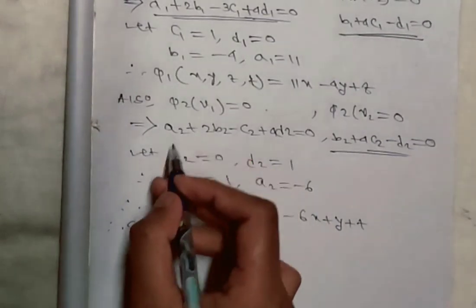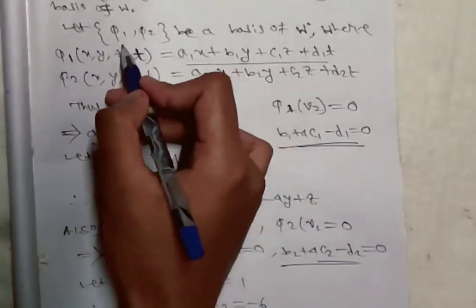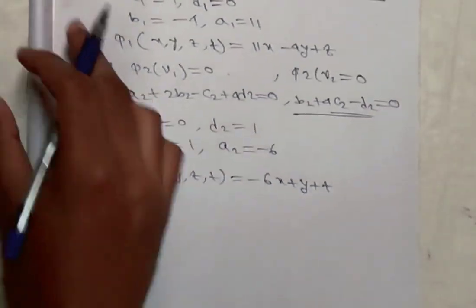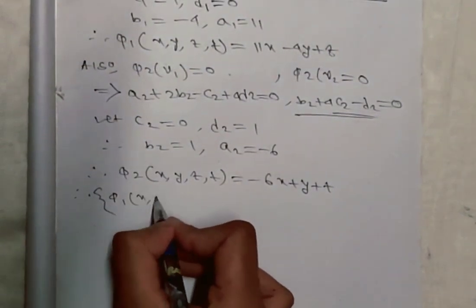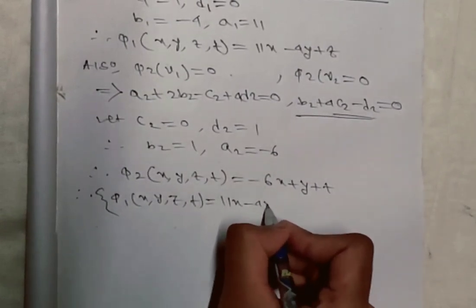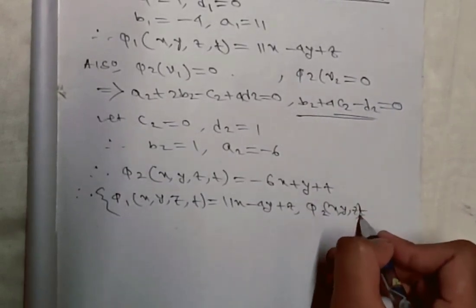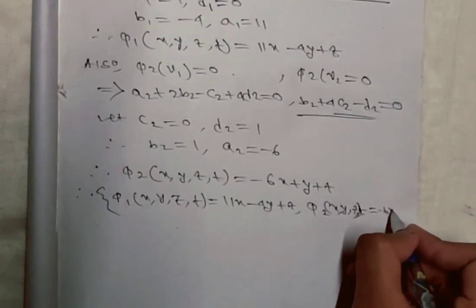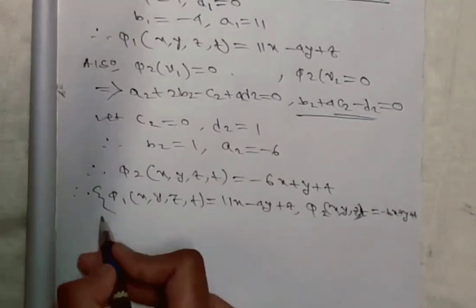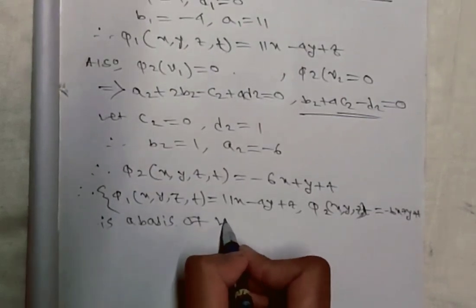Therefore the basis of W⁰ is {φ₁, φ₂}, where φ₁(x,y,z,t) = 11x - 4y + z and φ₂(x,y,z,t) = -6x + y + t.